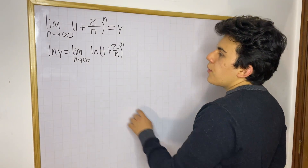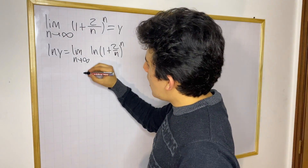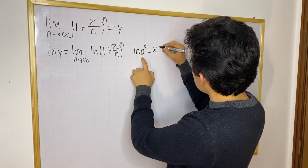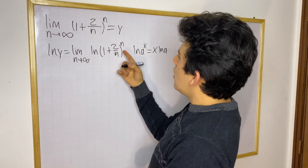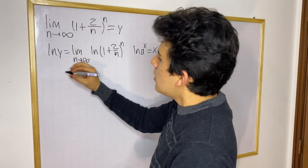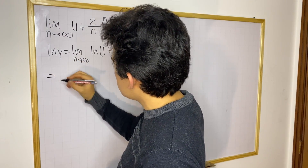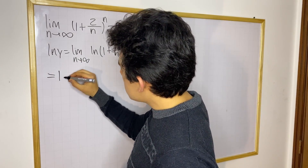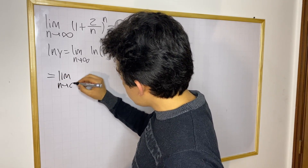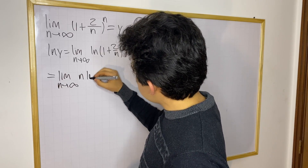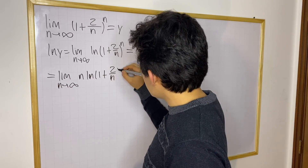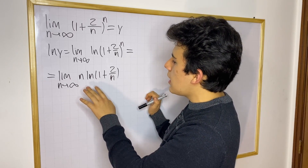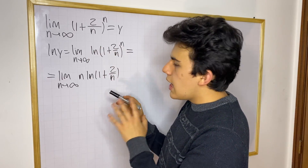We know that if we have ln of a function raised to an exponent, there is another property of logarithms: ln(a^x) = x·ln(a) — you can move the exponent to the front and multiply. Here we have exponent n, so we move it to the front. So ln(y) is going to be equal to the limit as n approaches infinity of n times the natural log of (1 + 2/n). Until this point, we have just rearranged the original function.